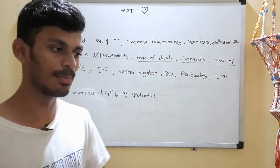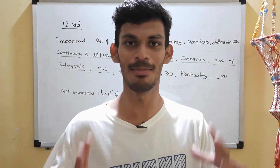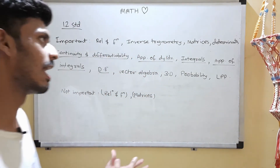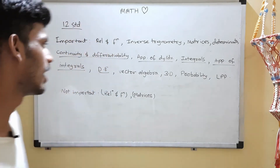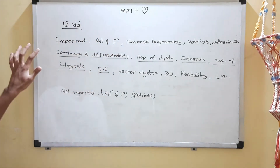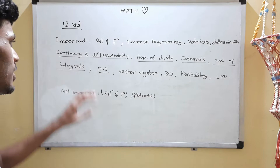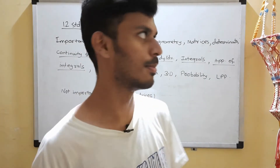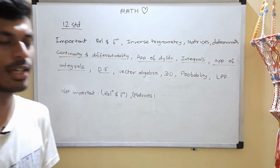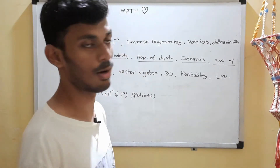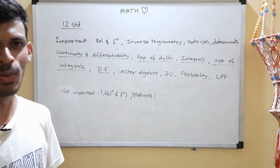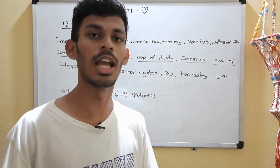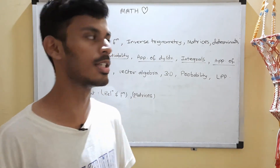Coming to 12th standard — it pains me to say that every 12th standard chapter is important, though some are relatively less so. In the important category: Relations and Functions is occasionally asked; Inverse Trigonometry has questions in every BITSAT paper; Matrices is occasionally asked with at most two questions; and Determinants is very important and usually asked in every BITSAT paper.